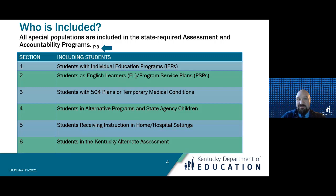Every section represents a different student group and the services they are eligible to receive under specific conditions. The sections represented include: students with IEPs; students who speak English as a second language, who may have access to a program service plan, and some may also require an IEP; students who have a 504 plan or where a medical emergency occurs and an accommodation is necessary; students in an alternative or state agency setting; students who receive instruction in home or hospital settings; and students who participate in the Kentucky Alternate Assessment.